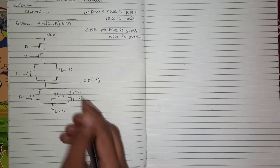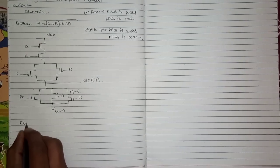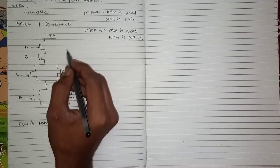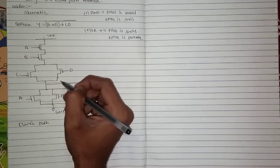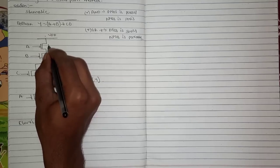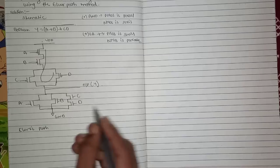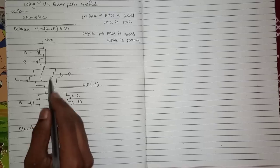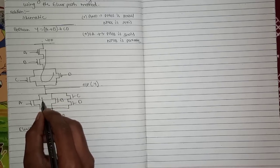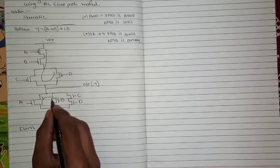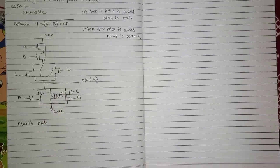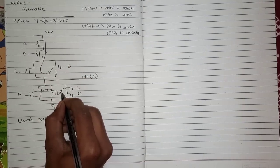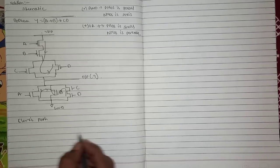Next we will draw the Euler's graph. For the Euler's path, there are many ways to draw it. I am taking the path as A, B, C, D — this is for both the pull-up network and pull-down network. The same path A, B, C, D is used for both. We will draw the Euler's graph now.